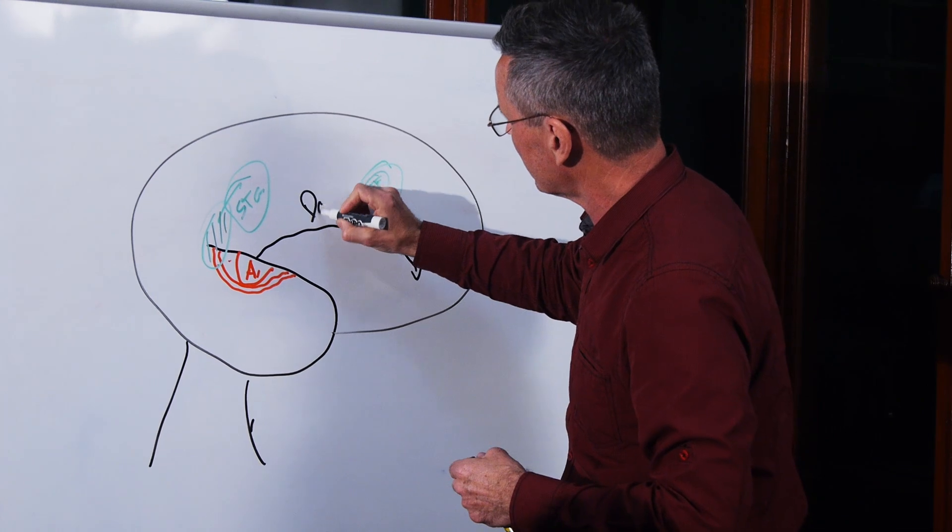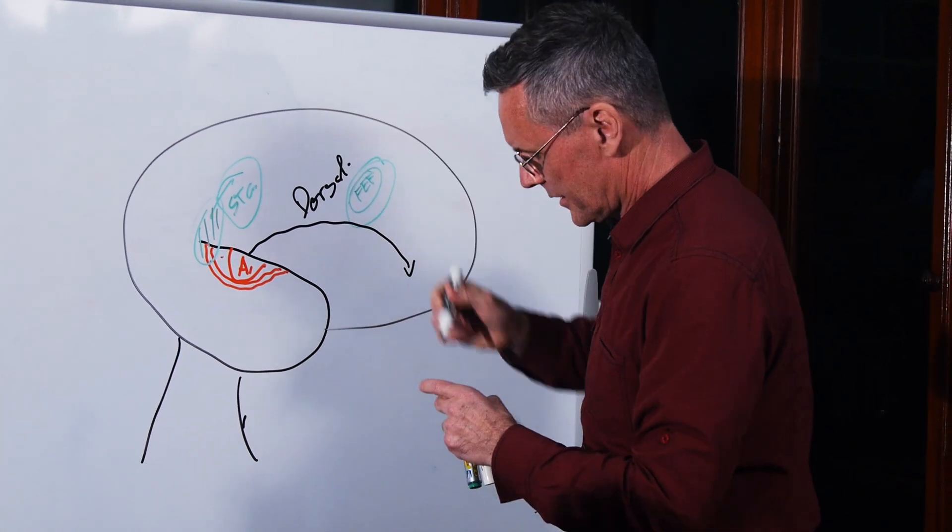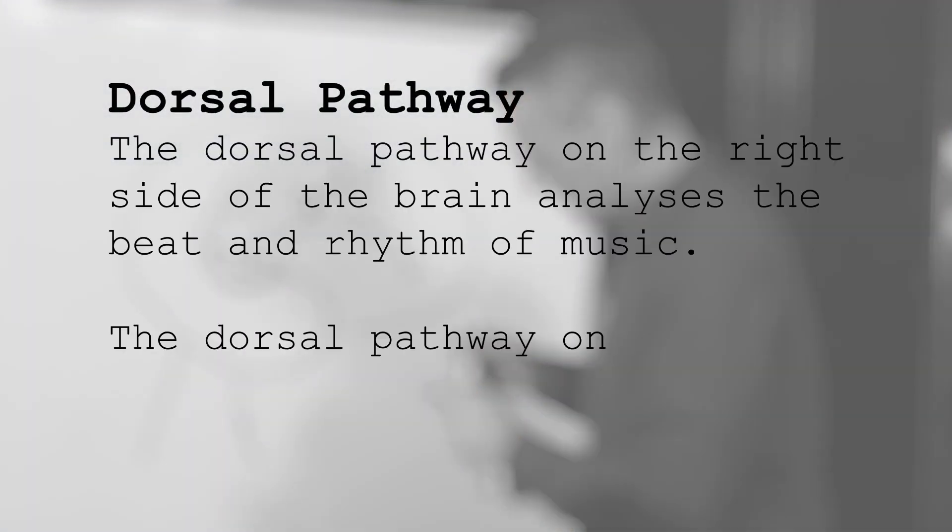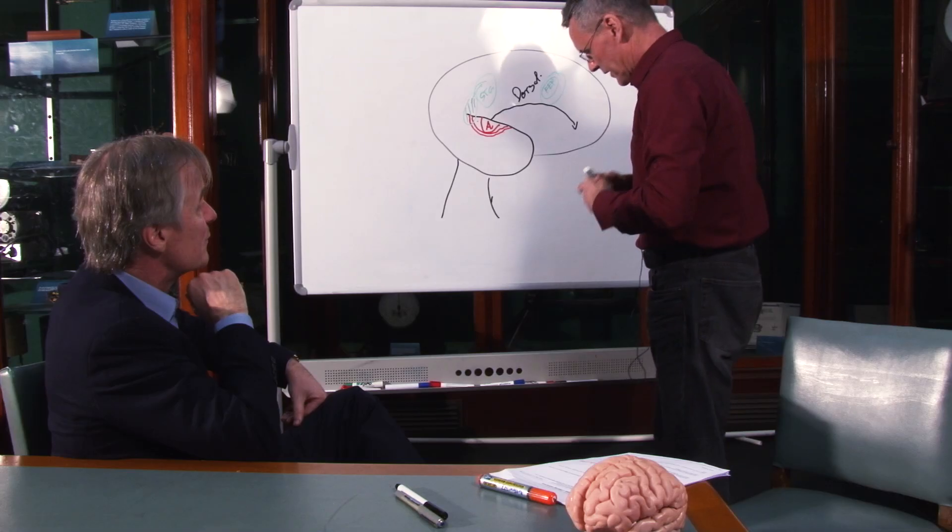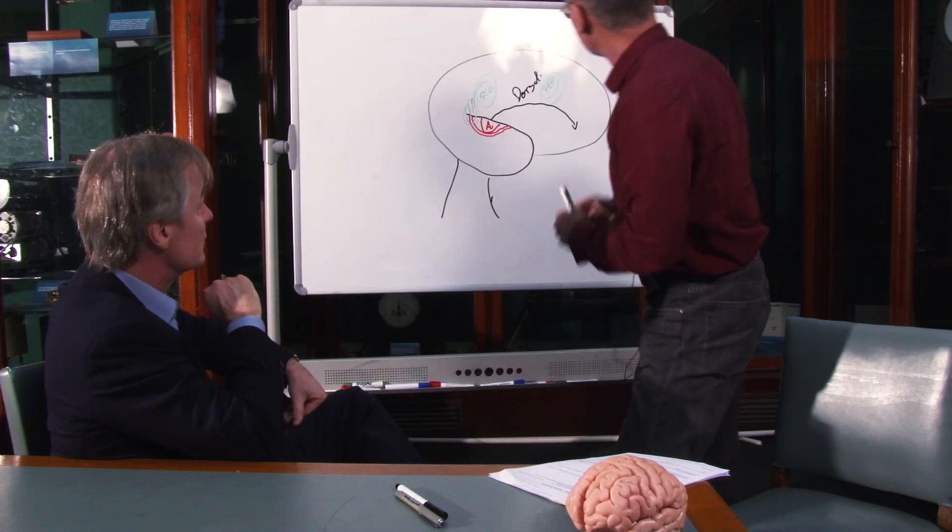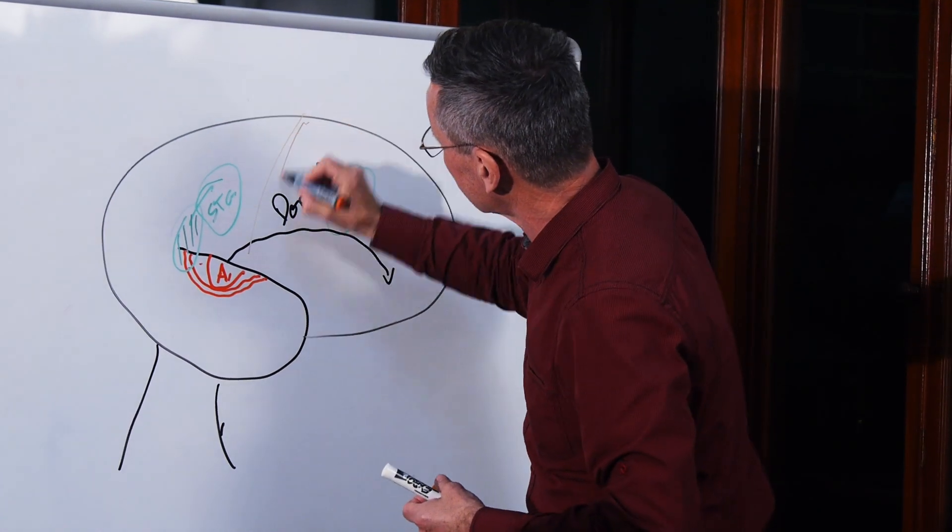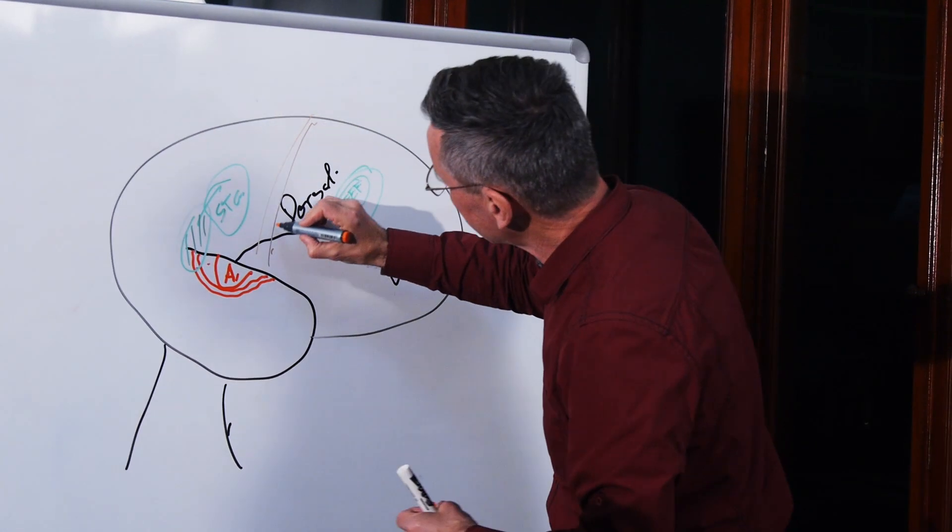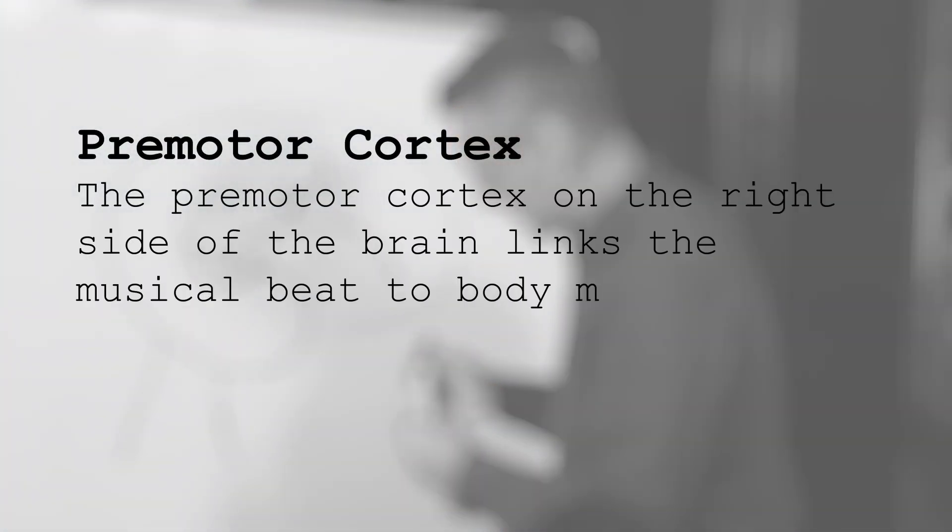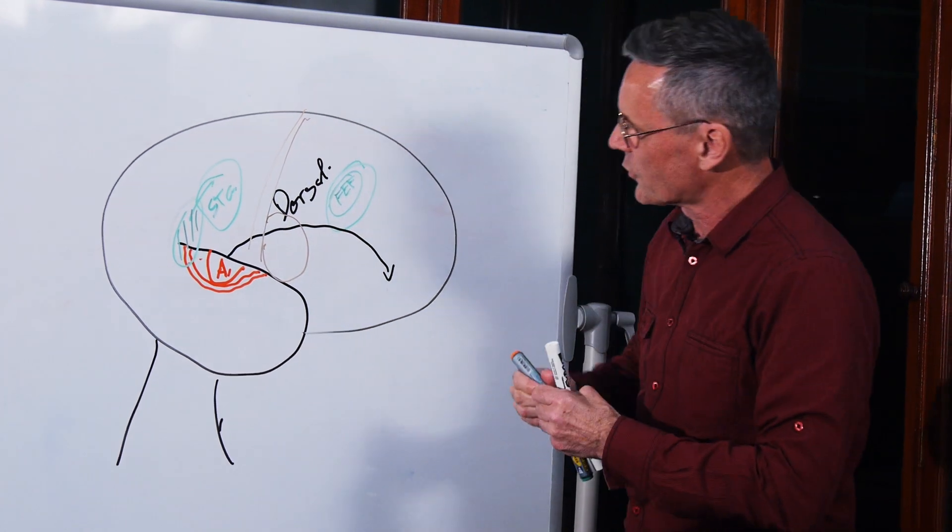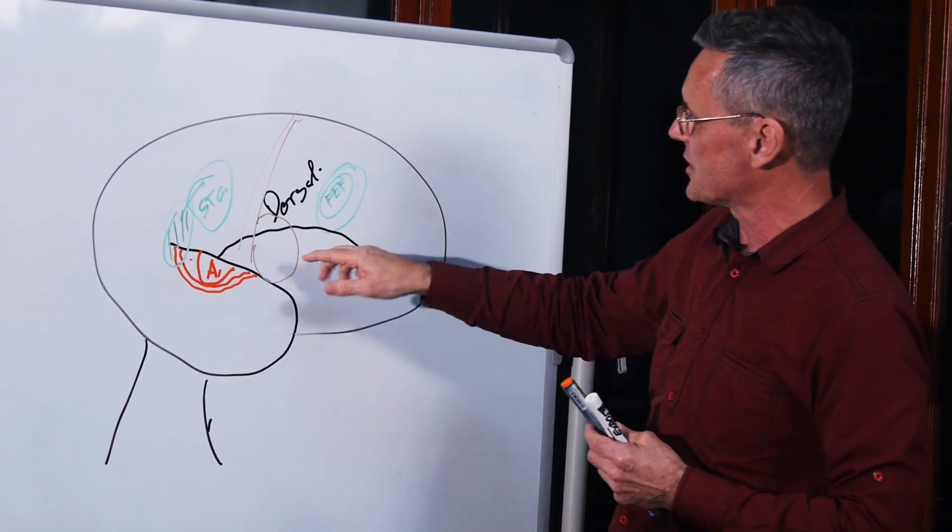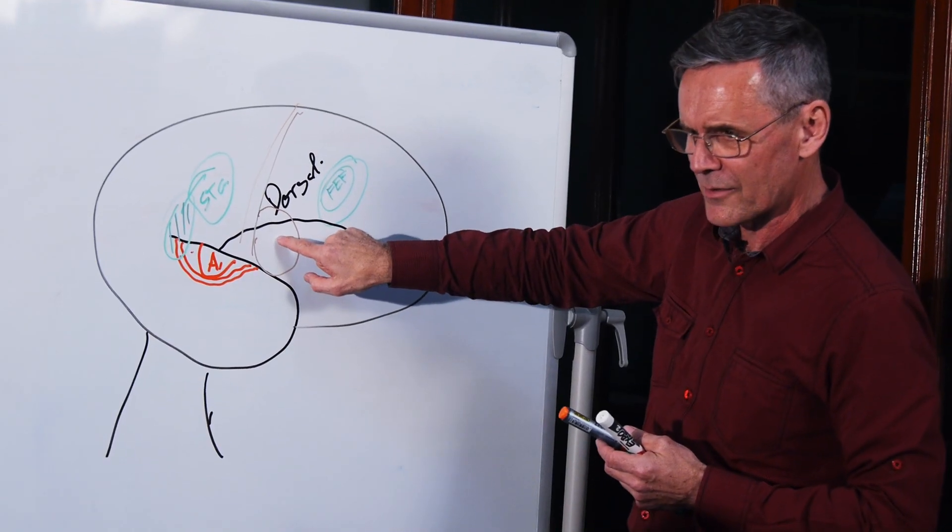This is the dorsal pathway. But the thing about the dorsal pathway I really like is that here's motor cortex here, and here is premotor. So the dorsal pathway puts a lot of information and integrates a lot of information with what's going on in premotor cortex.